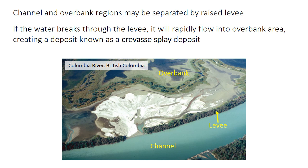Meandering river systems can also include another distinctive feature that arises from the separation of the channel from the overbank. There can be a raised levee, represented by the line with trees here. If water breaks through the levee during a flood, it can rush into the overbank area, spreading out and creating a fan-shaped deposit called a crevasse splay deposit. The overbank area is normally characterized by sediment deposited from very low energy water, like in ponds or swamps or standing water. So the abrupt influx of water bursting through the levee is a major contrast in water energy, and next class we'll talk about how sediment type and sedimentary structures are fundamentally controlled by the speed of water flow.